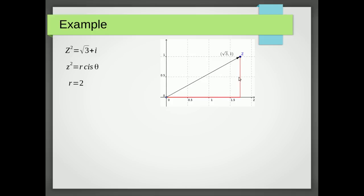To get the argument we do tan⁻¹ of this length over this length. It's really important to remember we're measuring from the positive real axis. If I do tan⁻¹ of 1 over √3, that's 30 degrees, and in radians that gives me π/6.